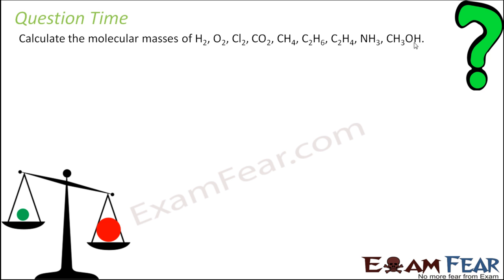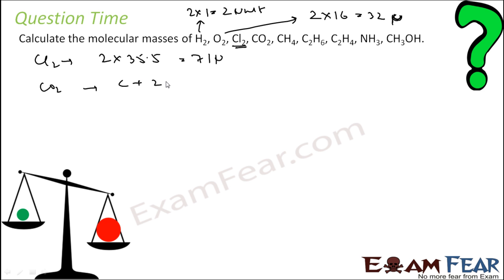Let's take some questions. We have to find the molecular mass of these compounds. They are all compounds. Hydrogen, two hydrogen, two into one, two unit. Oxygen, two oxygen, two into 16, 32 units. Chlorine, two chlorine atoms, two into 35.5, that is 71 units. Then we have CO2, one carbon plus two oxygen. Carbon is 12 units. Two oxygen is 16 units each. So add 32 plus 12, 44 units.